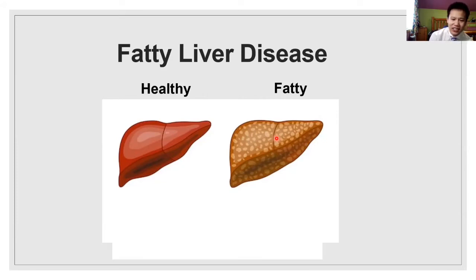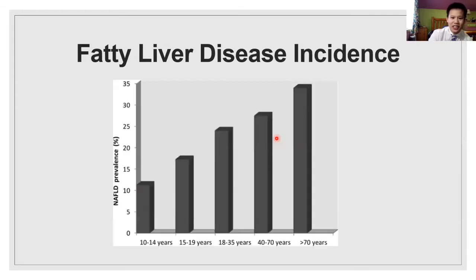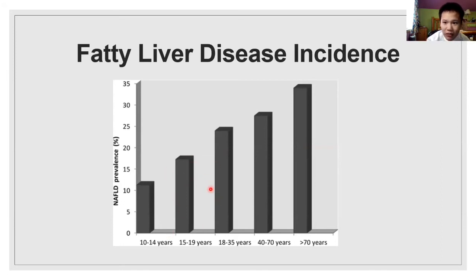And it's kind of scary, right? You don't want to get fatty liver disease. However, a high percentage of us have fatty liver disease. From this graph, you can see from your age group, maybe 10 to 20% of you have some form of fatty liver disease. And when you get older, it only increases. So that's kind of scary to think about.